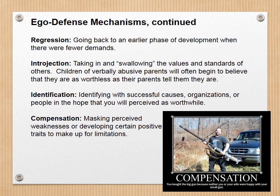Regression is going back to an earlier phase of development when there were fewer demands. For example, something terrible happens and you have an overwhelming desire to smoke a cigarette even though you haven't smoked in years — that's an oral compulsion, almost like wanting a baby bottle back. The idea behind regression is you just don't want to deal with it. Introjection is taking in and swallowing the values and standards of others — children of verbally abusive parents will often begin to believe they are worthless because their parents tell them they are.